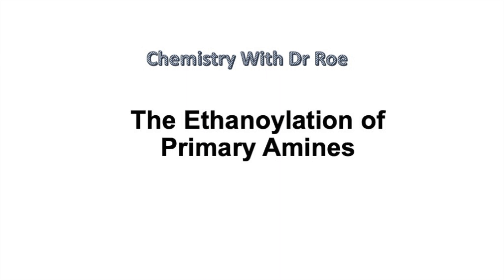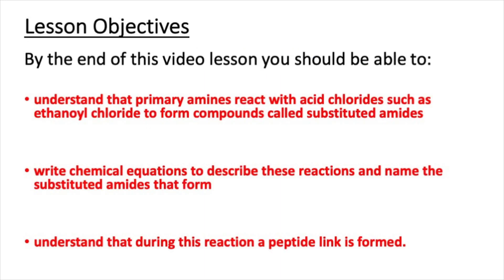Welcome to our latest video on the ethanoylation of primary amines. This video is suitable for A-level students. By the end of this video lesson, you should understand that primary amines react with acid chlorides such as ethanoyl chloride to form compounds called substituted amides. You should also be able to write chemical equations to describe these reactions and be able to name the substituted amides that form.